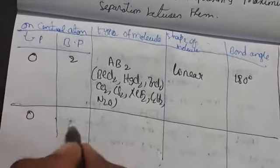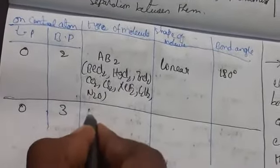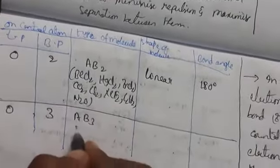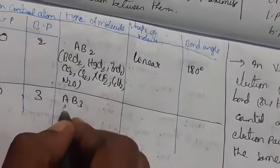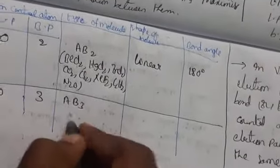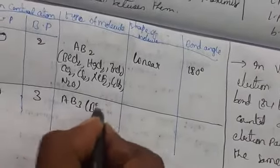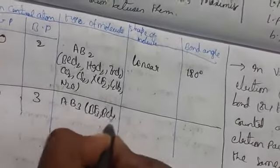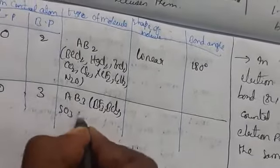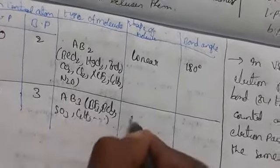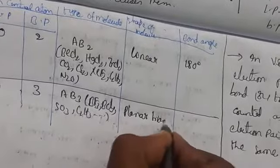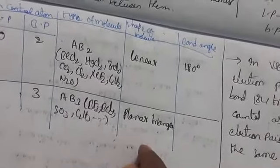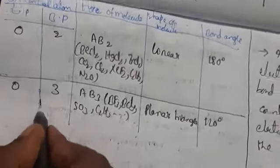With zero lone pairs and three bond pairs, the molecule type is AB3 and the shape is trigonal planar with a bond angle of 120°. Examples include BF3, BCl3, SO3, and C2H4.